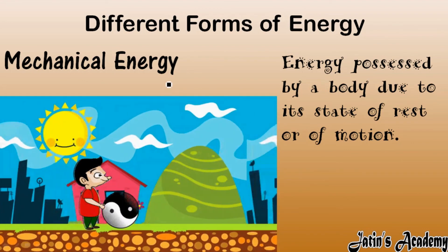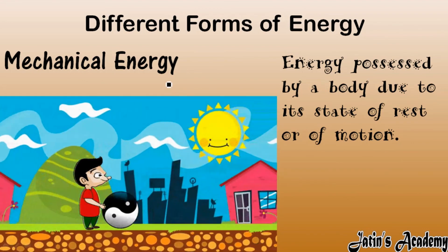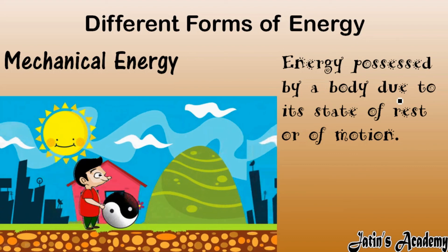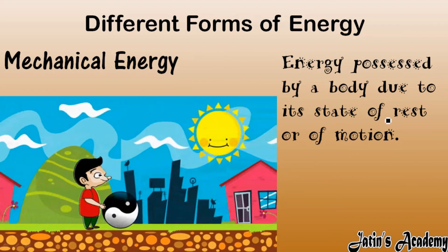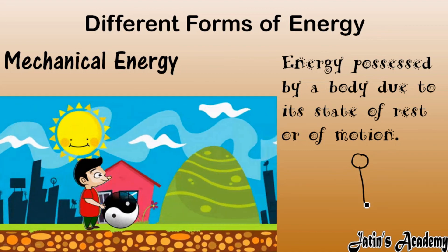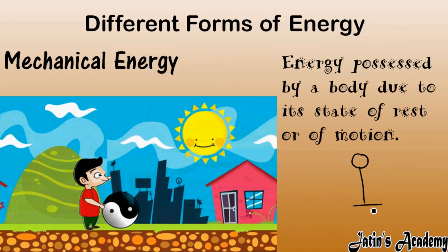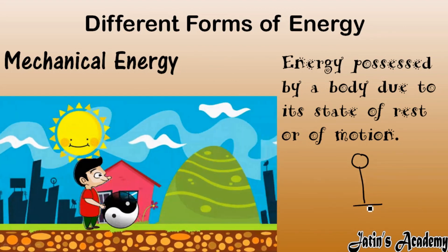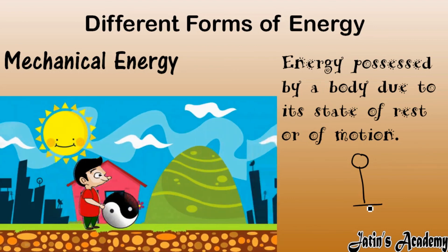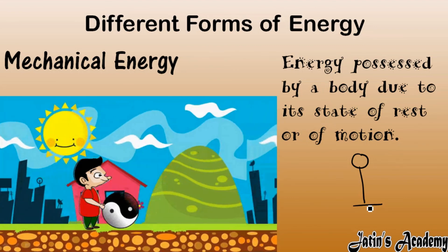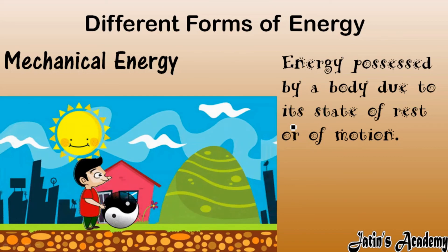Mechanical energy is basically of two types: energy possessed by a body due to its state of rest or motion. If the body is at rest at some height, that is potential energy; if it is moving, that is kinetic energy. Both rest and motion types of energy come under mechanical energy.